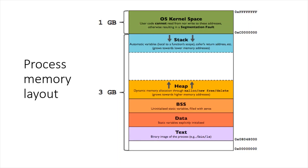This is the memory layout of a process. It is divided into certain sections: text, which has the code; data and BSS, which have the static variables initialized and uninitialized; heap, which has the variables that use dynamic memory; stack, which has all the local variables and return address to the caller; and the kernel space, which user code cannot read or write from.